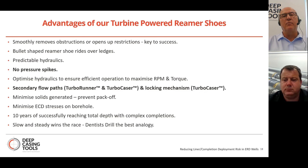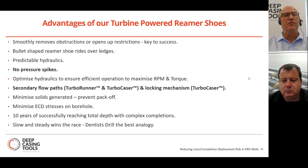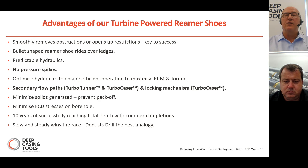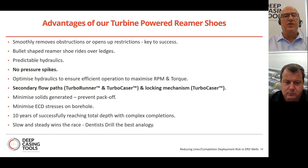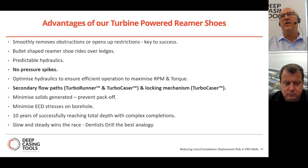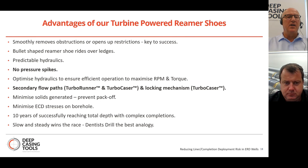To summarize the advantages of turbine-powered reaming shoes: they smoothly remove obstructions without causing further wellbore cyclical stresses. The bullet-shape reaming shoe rides over ledges. Hydraulics are very predictable with no pressure spikes. We optimize hydraulics to get maximum RPM and torque at very low flow rates. Safety features include secondary flow paths through the Turbo Runner and Turbo Caser, plus locking mechanisms to ensure the Turbo Caser can always be drilled out. The PDC cutter size and high RPM are designed to generate small cuttings easily pumped up through the small annulus, preventing pack-off. We like to think of it as a dentist's drill — slow and steady wins the race.